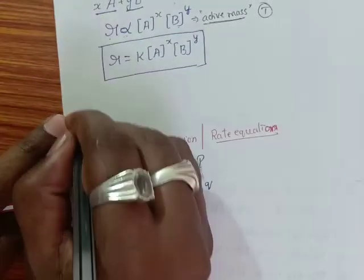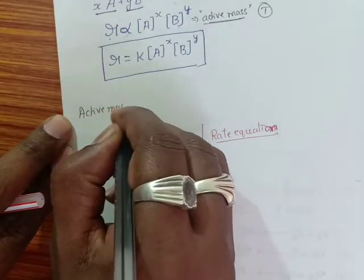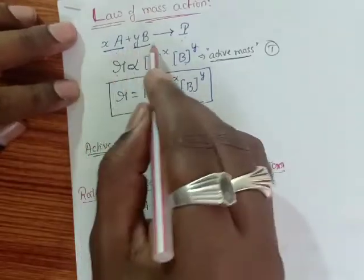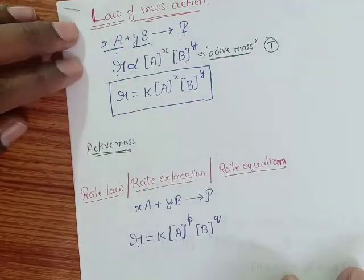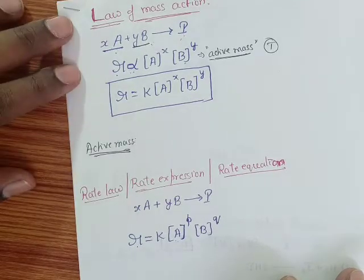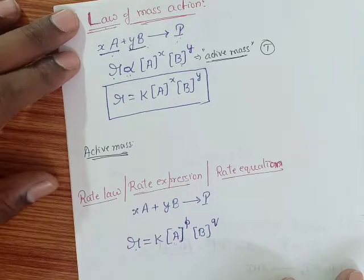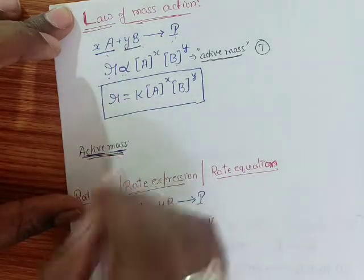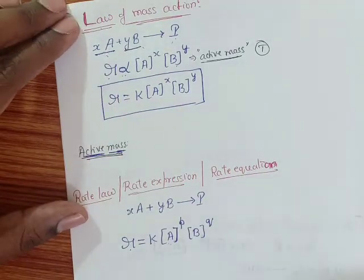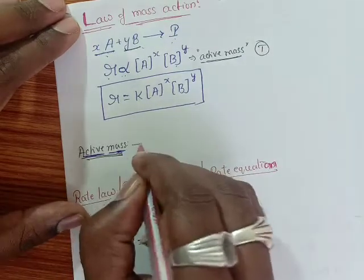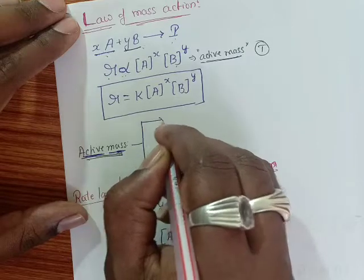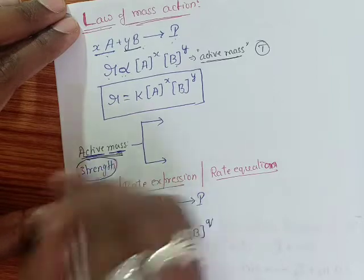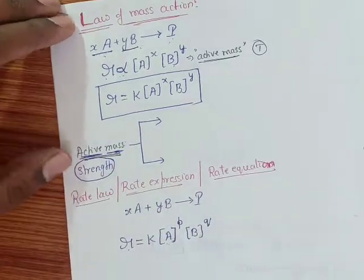One question arises: what is the meaning of active mass? If the reactant molecules are active in nature, then only they collide with each other to bring about the chemical change. If the reactant molecules are inactive, then collision does not take place to lead to products. So, the molecule should be active and combined in a proper mass so that the reaction takes place. Active mass is a term used to express the strength of the reactant molecules.